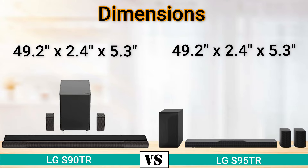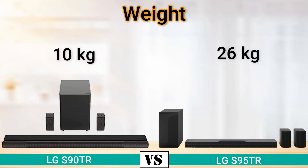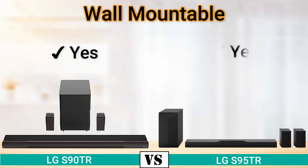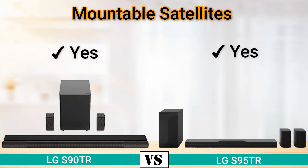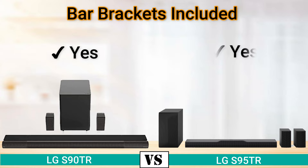Dimensions: 49.2 x 2.4 x 5.3 inches. Weight: 10 kg and 26 kg. Wall mountable: yes. Mountable bar: yes. Mountable satellites: yes. Bar bracket included: yes.